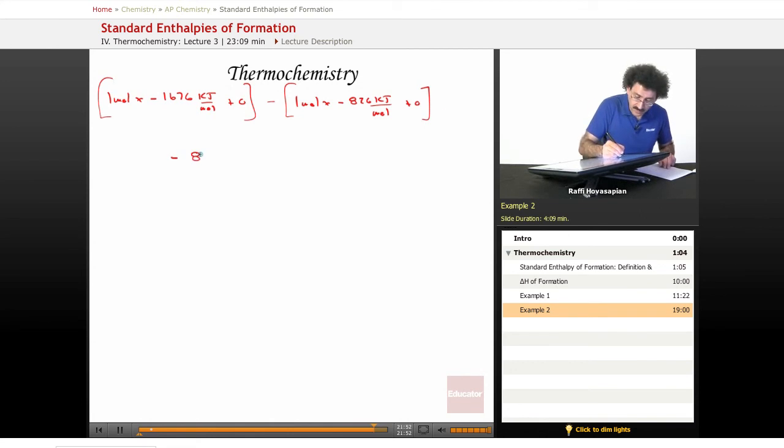When we do this, we get minus 850 kilojoules. That's 850,000 joules.